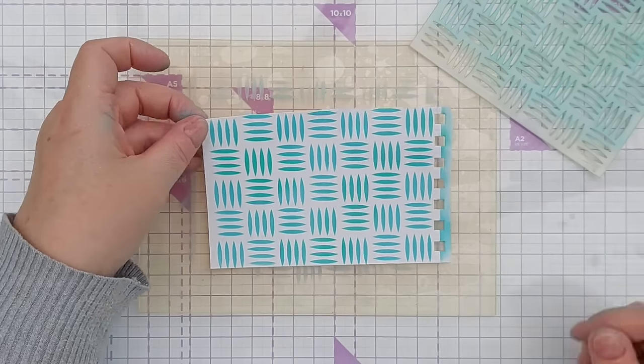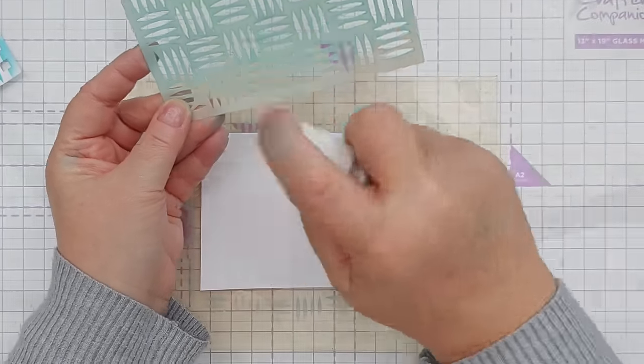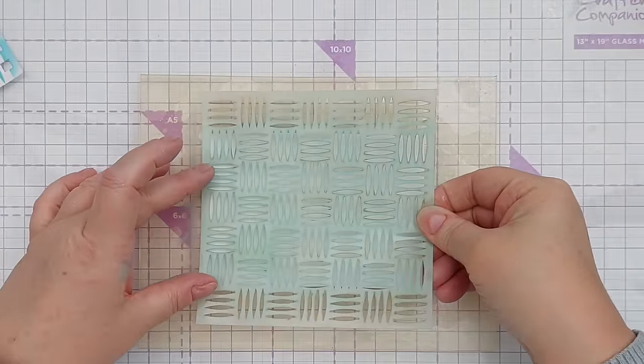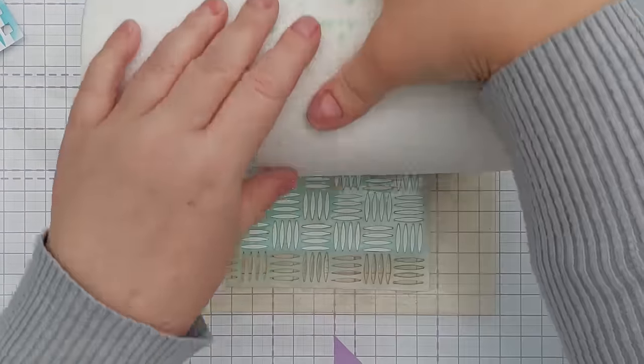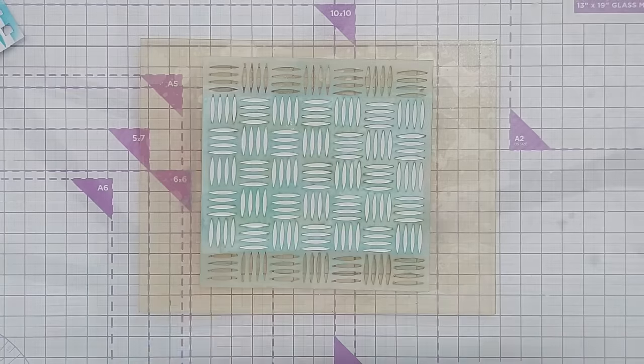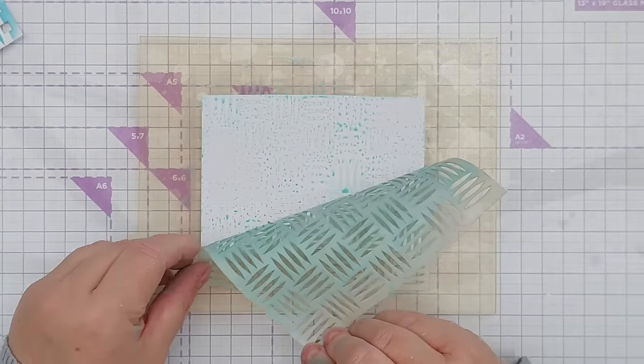But when I finished my blending I took the stencil, spritzed it with some shimmery water, and then pressed it down onto another piece of mixed media paper. So I used the stencil a bit like a stamp. This gave me a lovely ethereal, light and airy pattern on my paper.